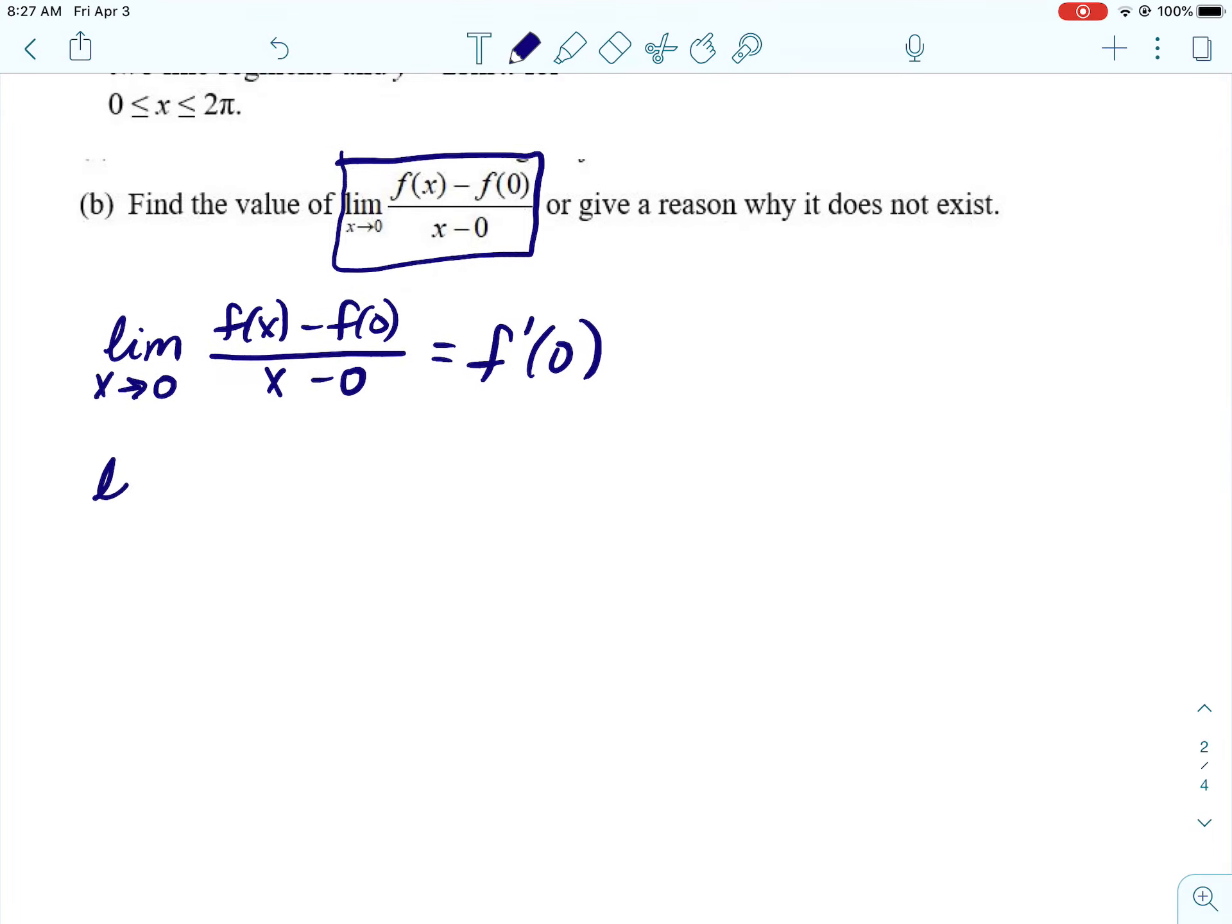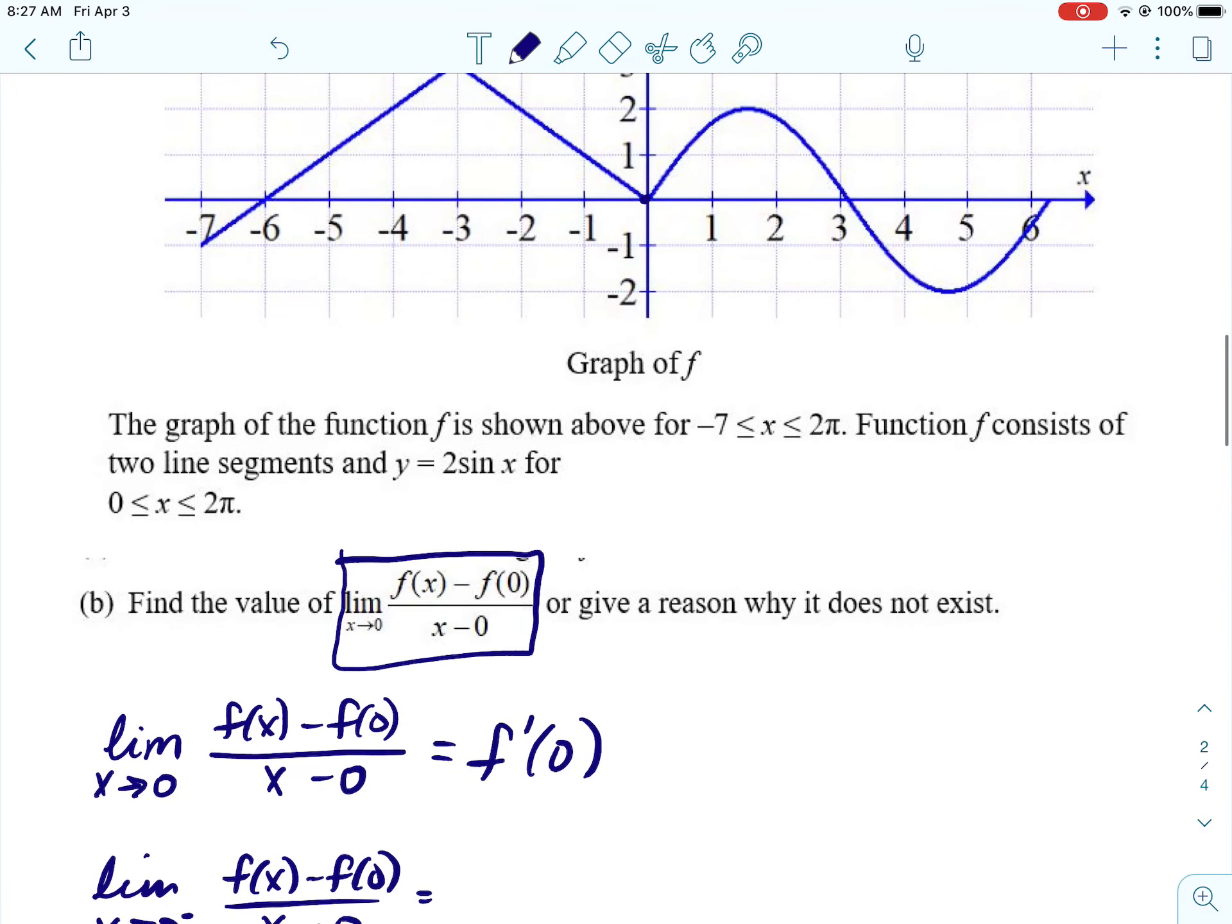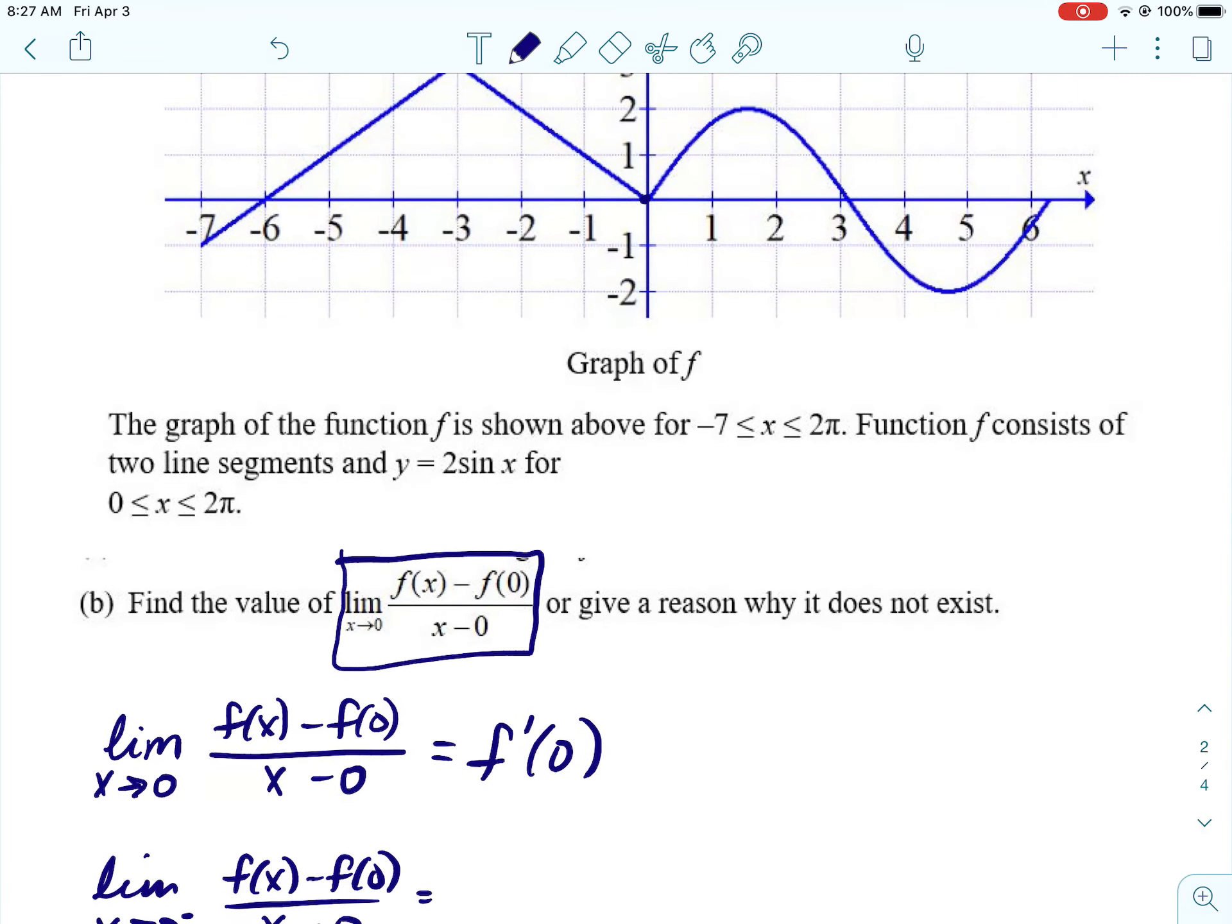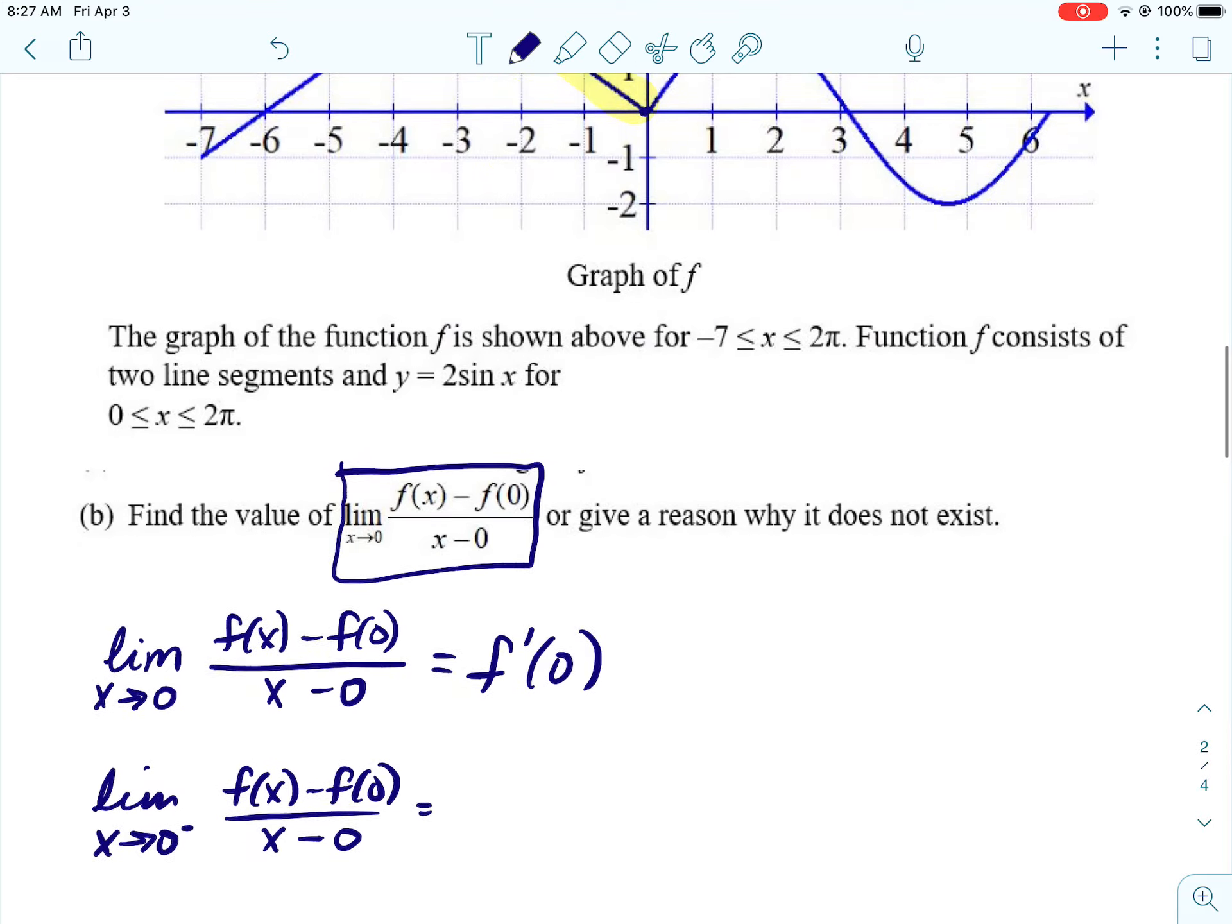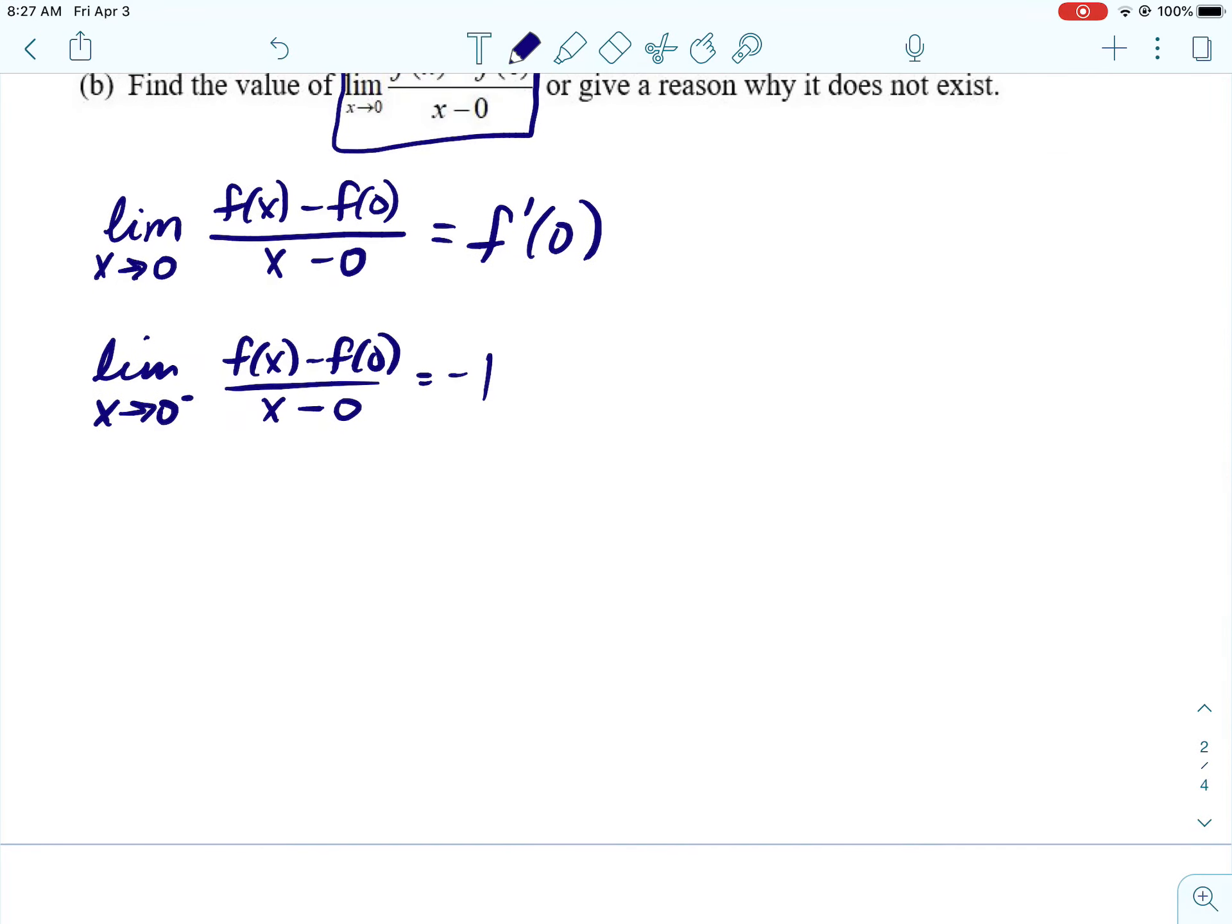So the reason why is that the limit as X approaches 0 from the left of this expression is just going to be the slope of the line on the left side of 0. So we're looking at the slope of this line right here, which is negative 1.